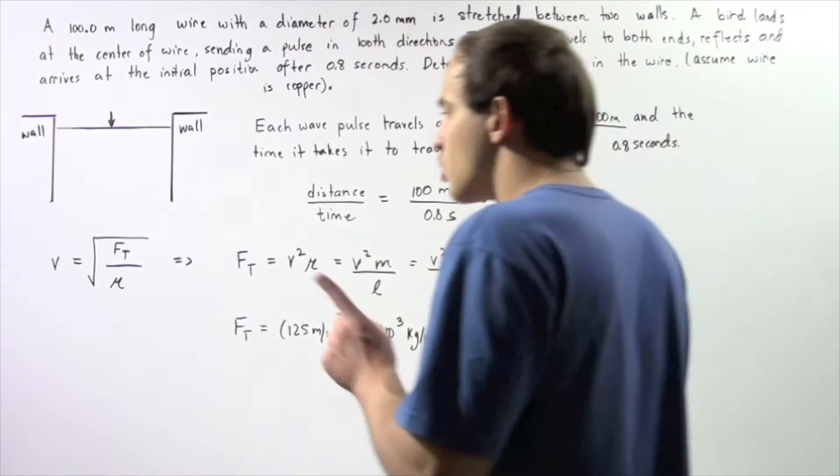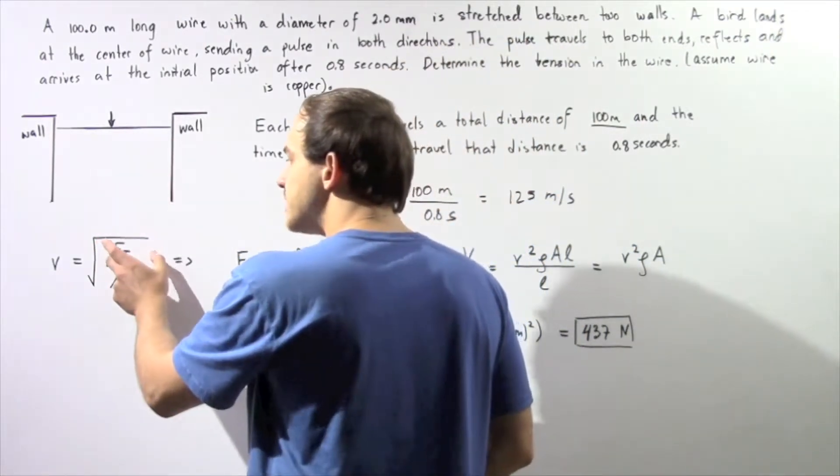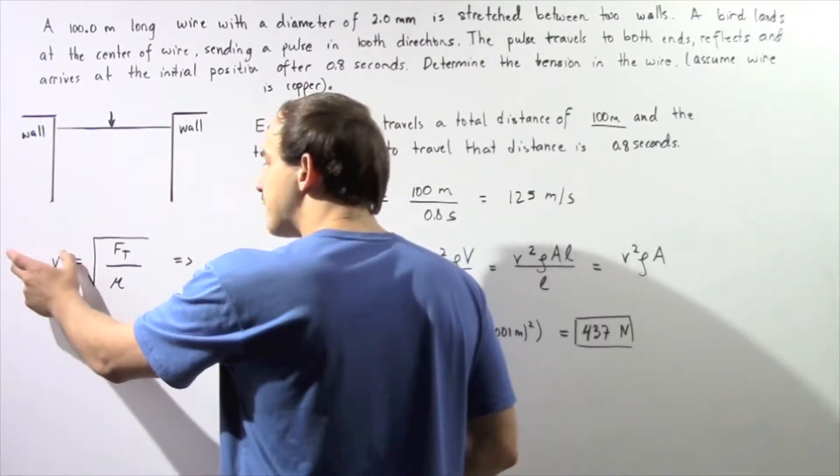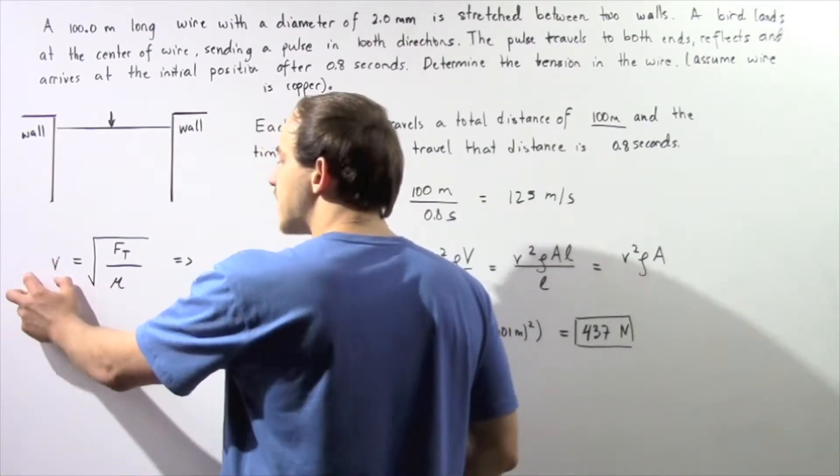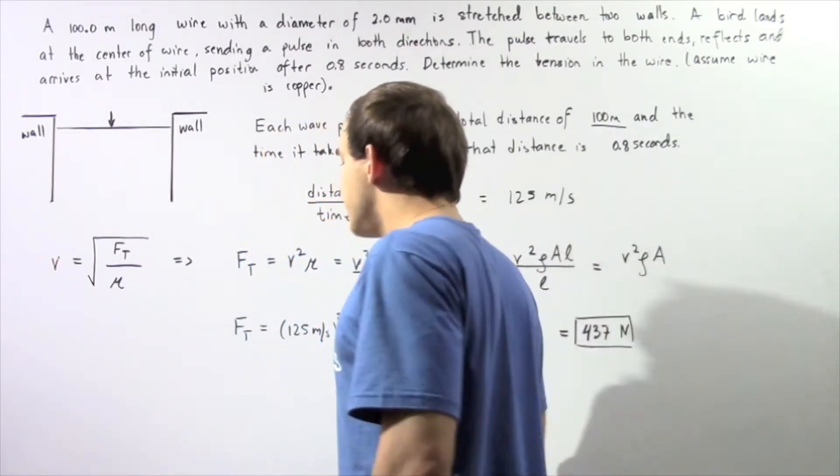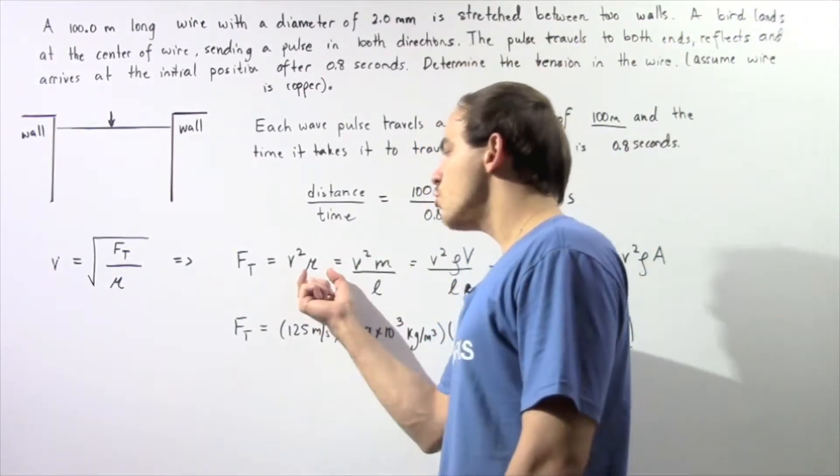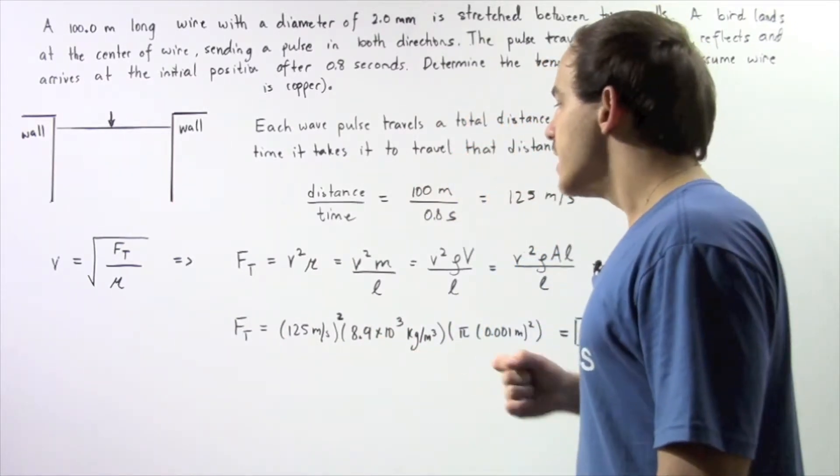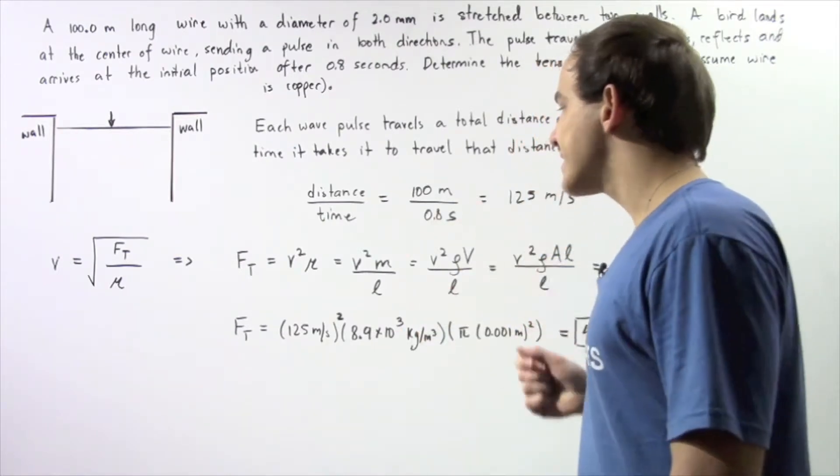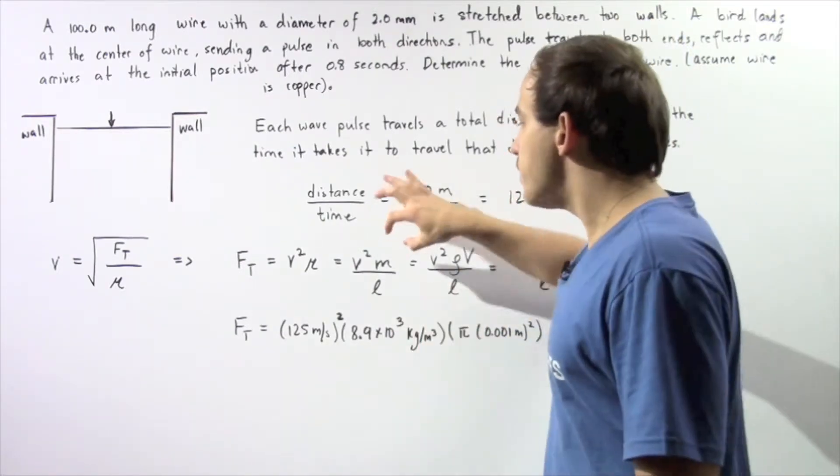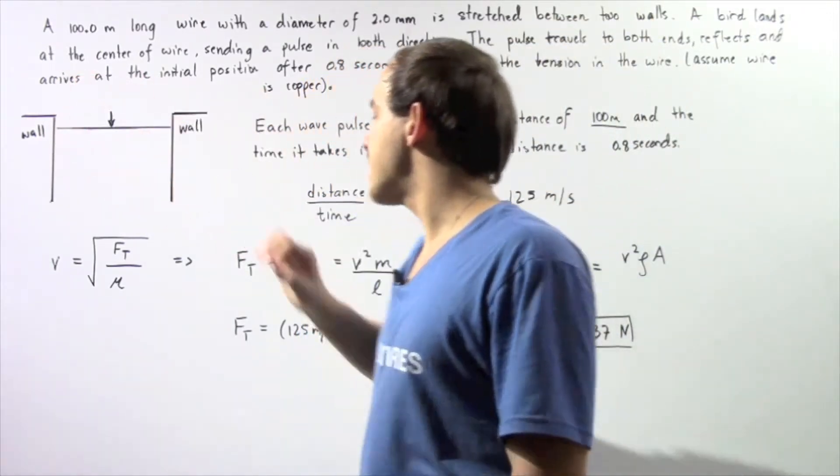Now, we want to solve for the tension in our wire. So that means we take the square of both the left and right side and we bring our μ to the left side of our equation. And we see that the tension in our wire is equal to the product of μ and the square of our velocity. So what exactly is μ? Well we recall that μ is mass divided by length where mass is the mass of our wire and length is the length of that same wire.